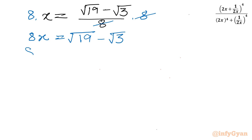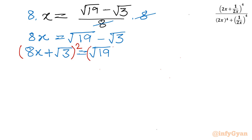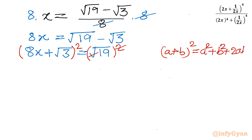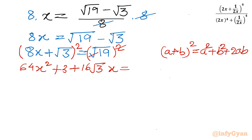Adding √3 to both sides: 8x + √3 = √19. Now squaring both sides, the right-hand side becomes 19, and applying (a + b)² = a² + b² + 2ab on the left gives 64x² + 3 + 16√3·x = 19.